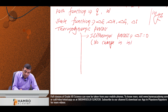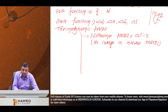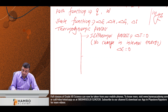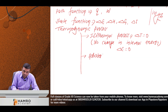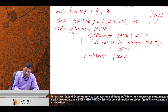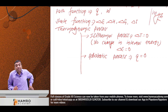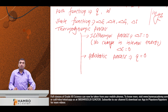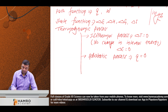In an isothermal process, there is no change in internal energy. Next, adiabatic process: there is no exchange of heat, so q = 0.